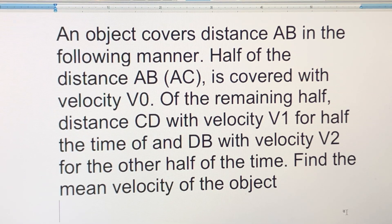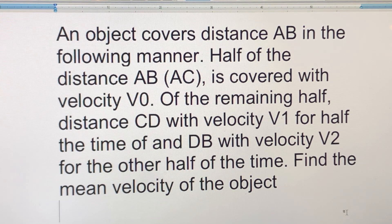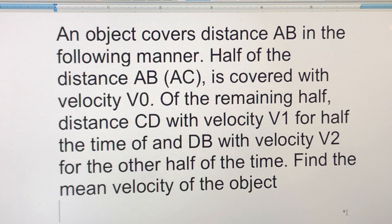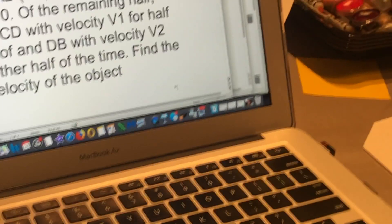Hello dear friends. I got a friend who sent me this question. An object covers distance AB in the following manner: half of the distance AB, which is AC, is covered with velocity V0. Of the remaining half, distance CD with velocity V1 for half of the time, and DB with velocity V2 for the other half of the time. Find the mean velocity of the object. Okay, this is the problem. Now we will do it step by step.